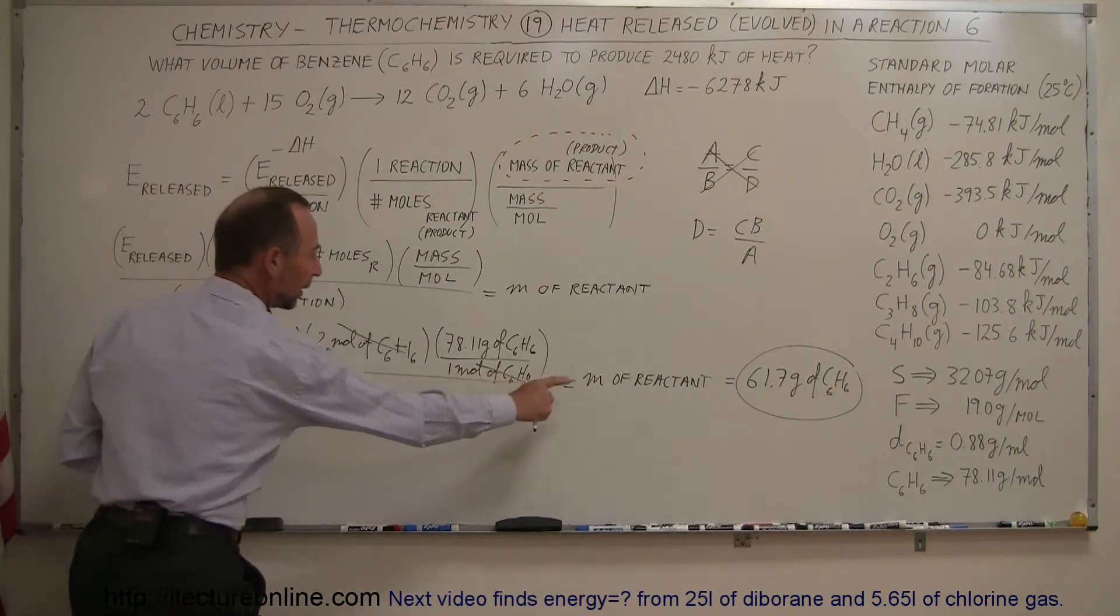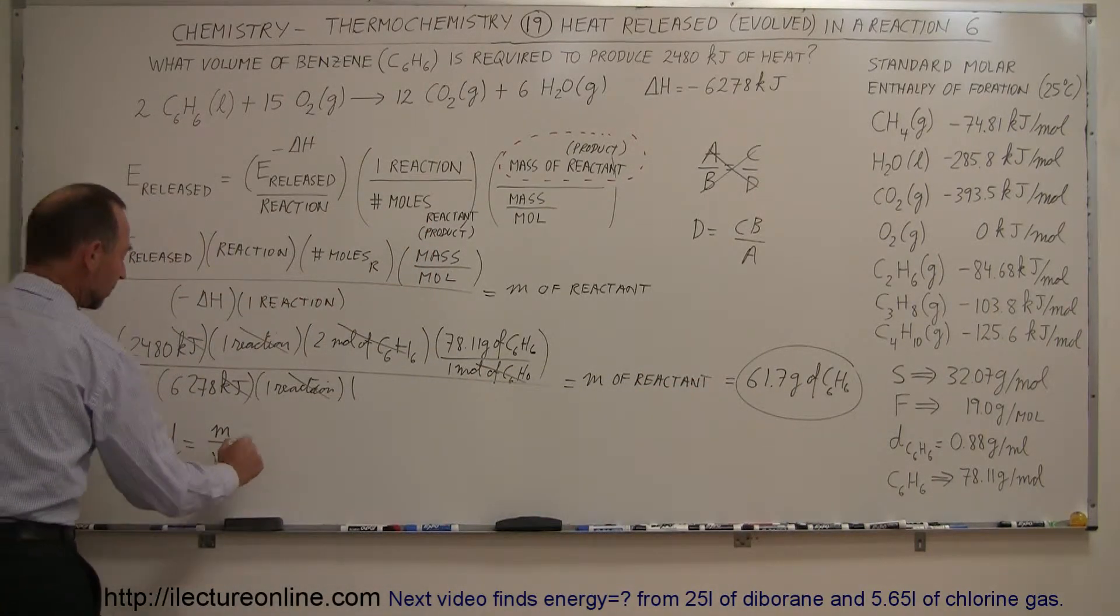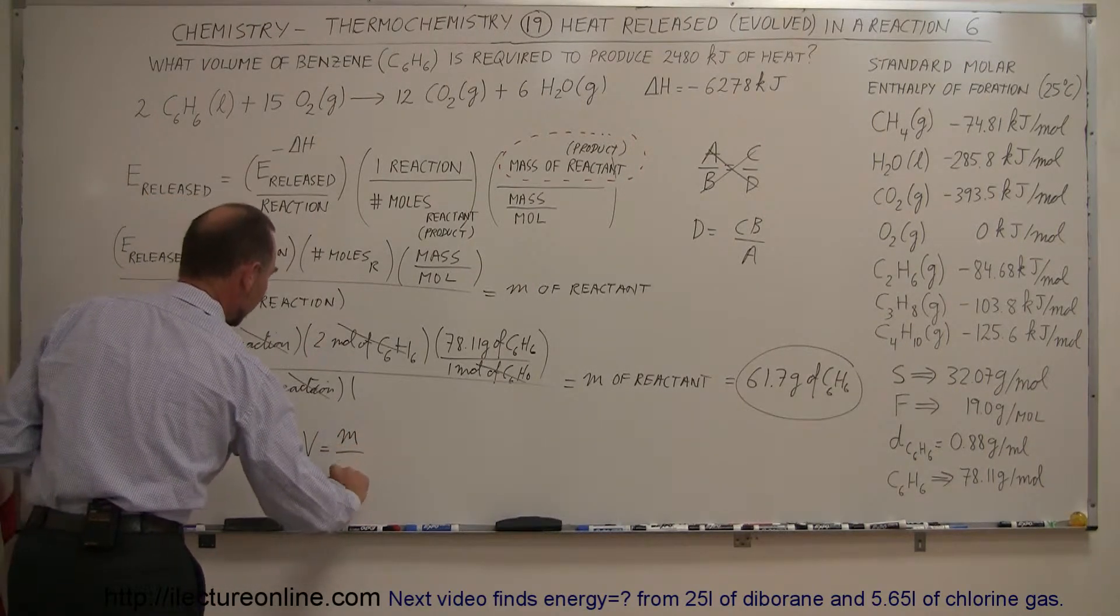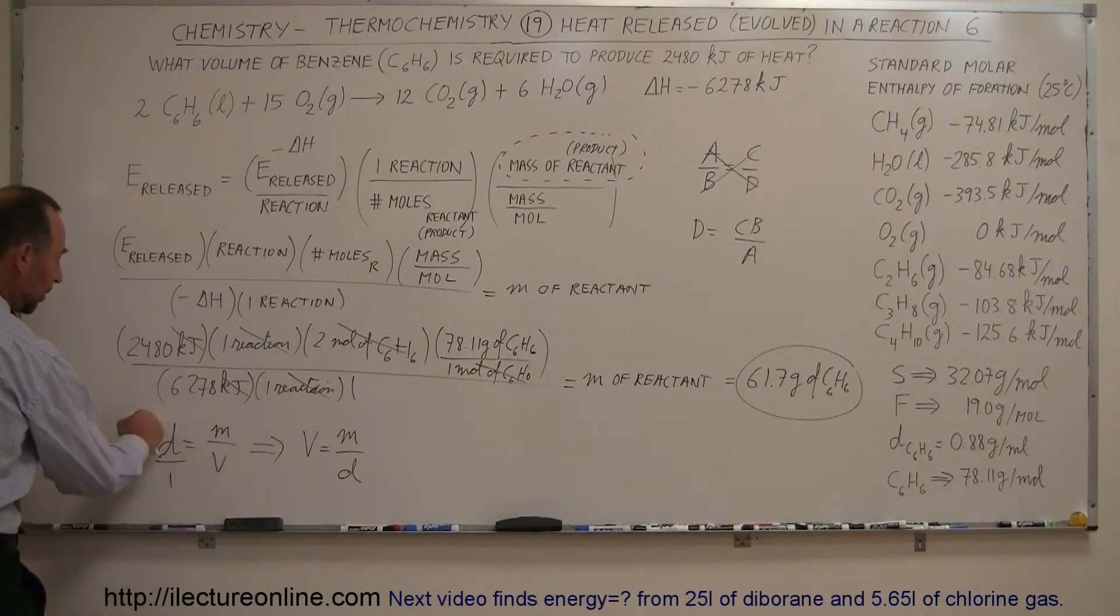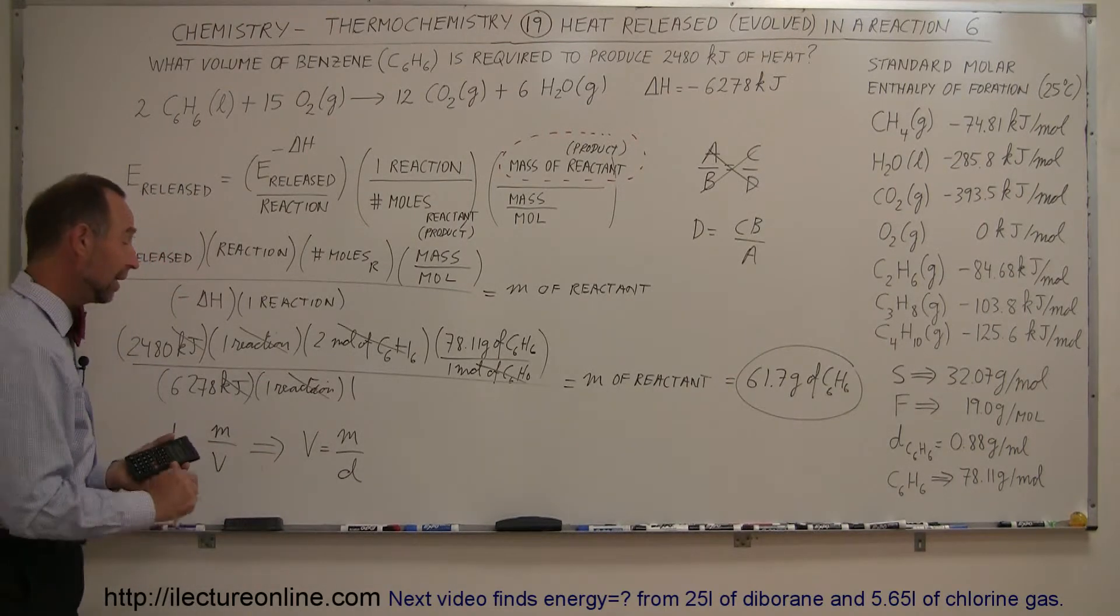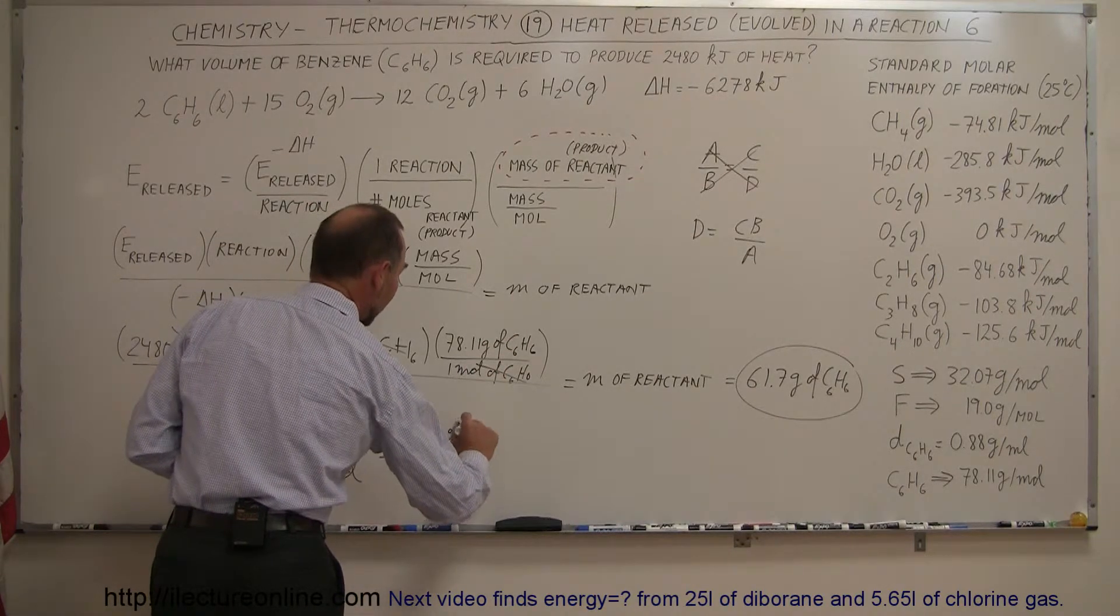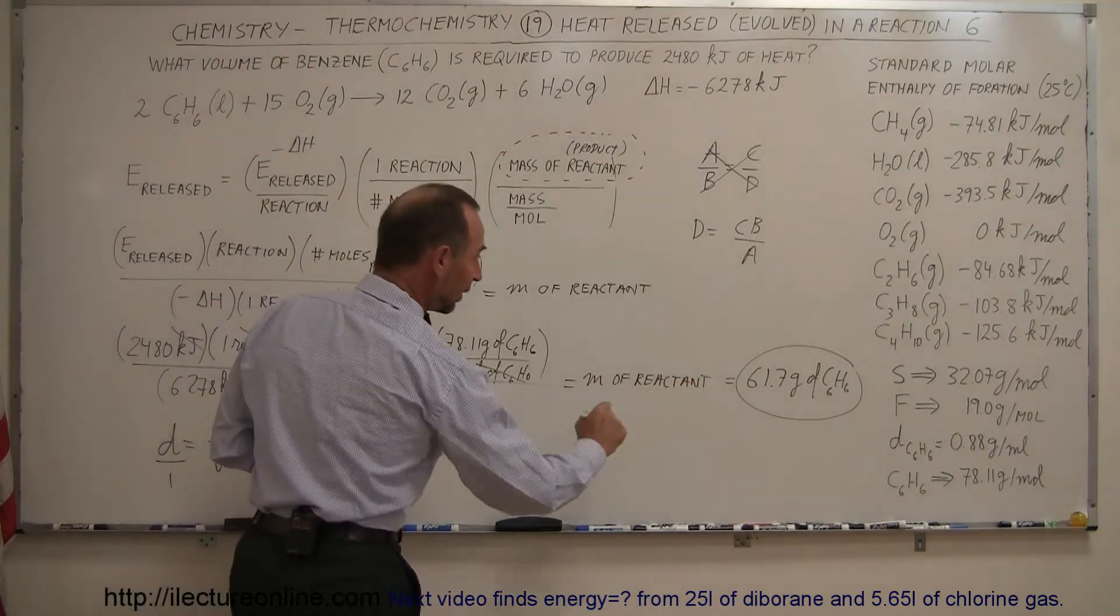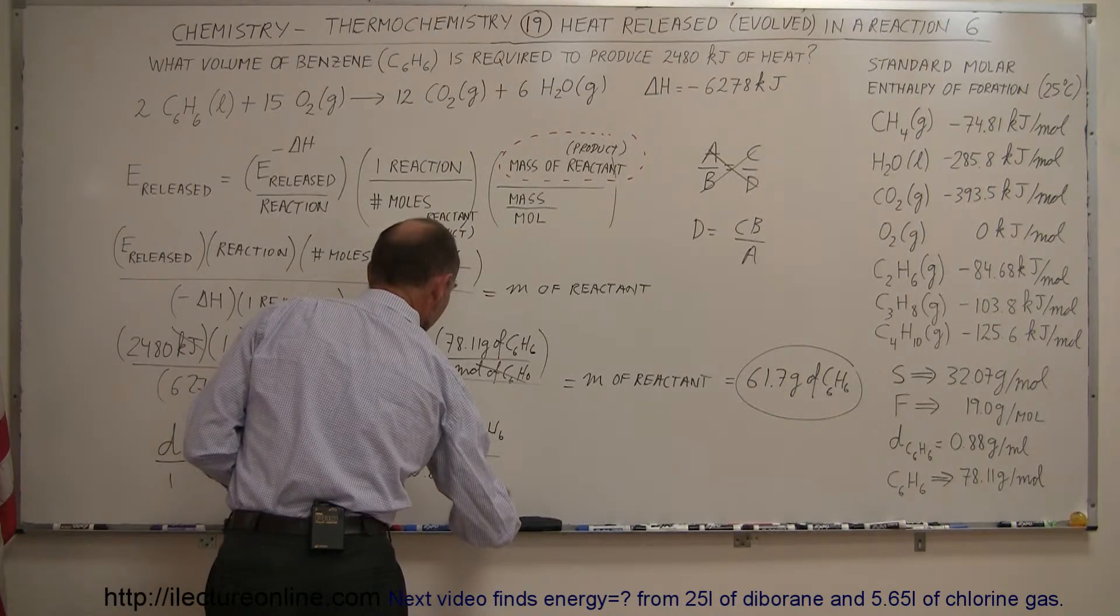So we calculated the mass, we're given the density, we should from that be able to calculate the volume by rearranging this equation by saying volume is equal to mass divided by the density. Remember, we can move things across the diagonal, this is density over one, so volume can come up here to the numerator, density moves down there to the denominator on the other side of the equal sign. And so now we go ahead and write this as 61.7 grams of C6H6 divided by the density, which is 0.88 grams per milliliter.